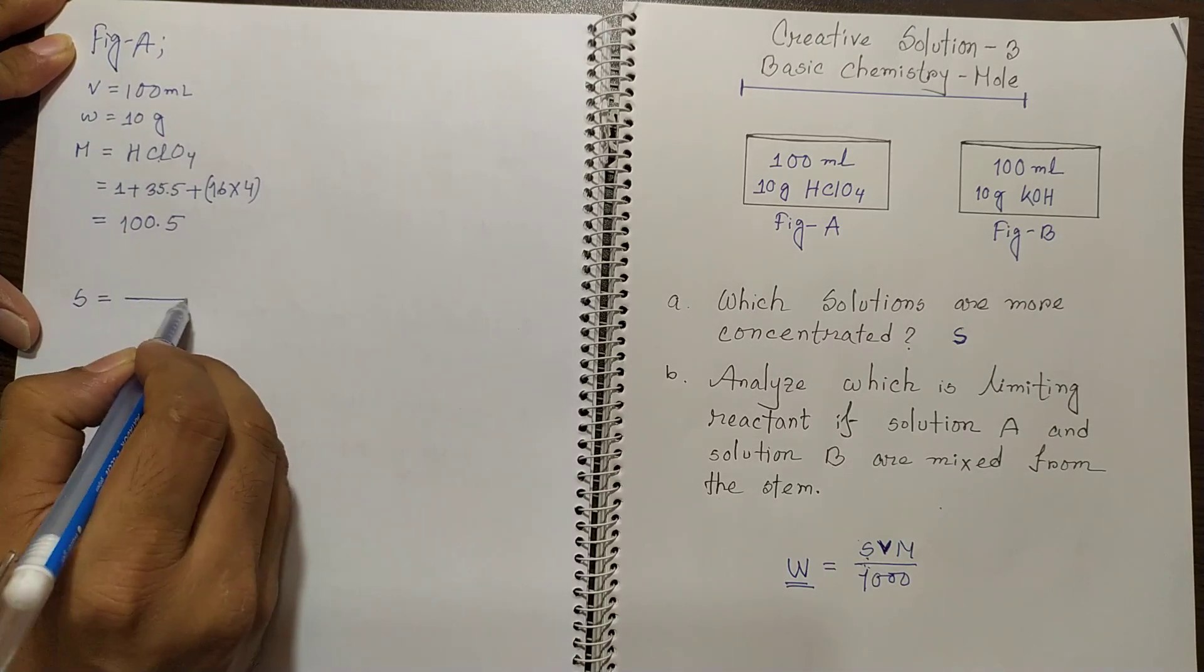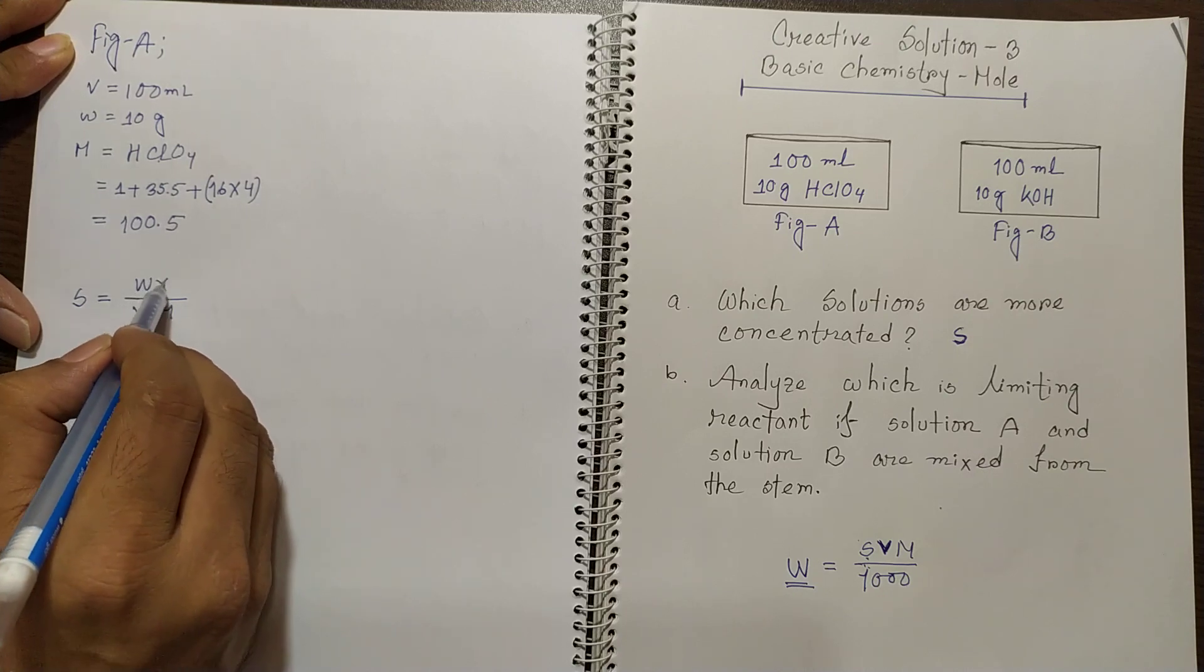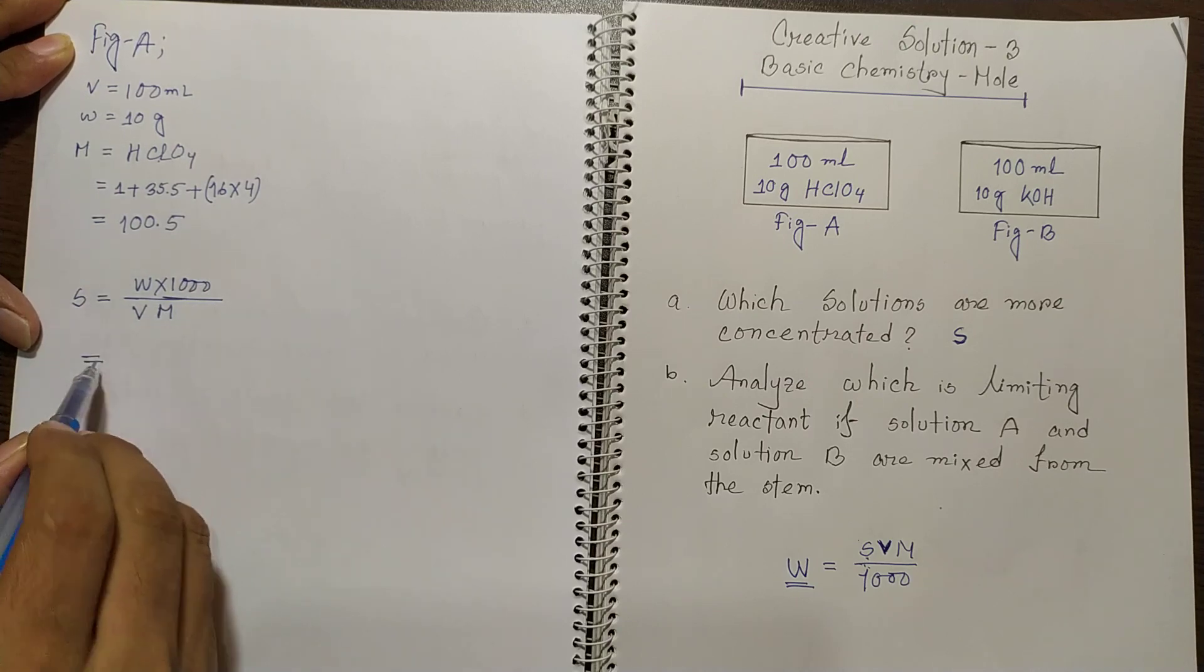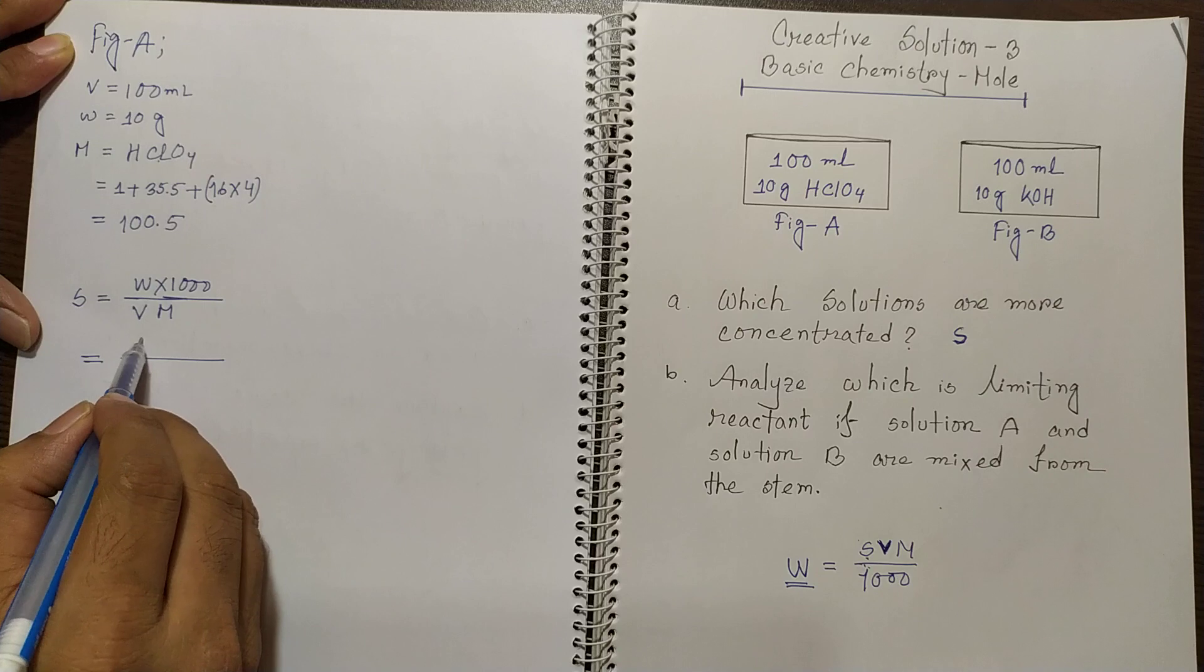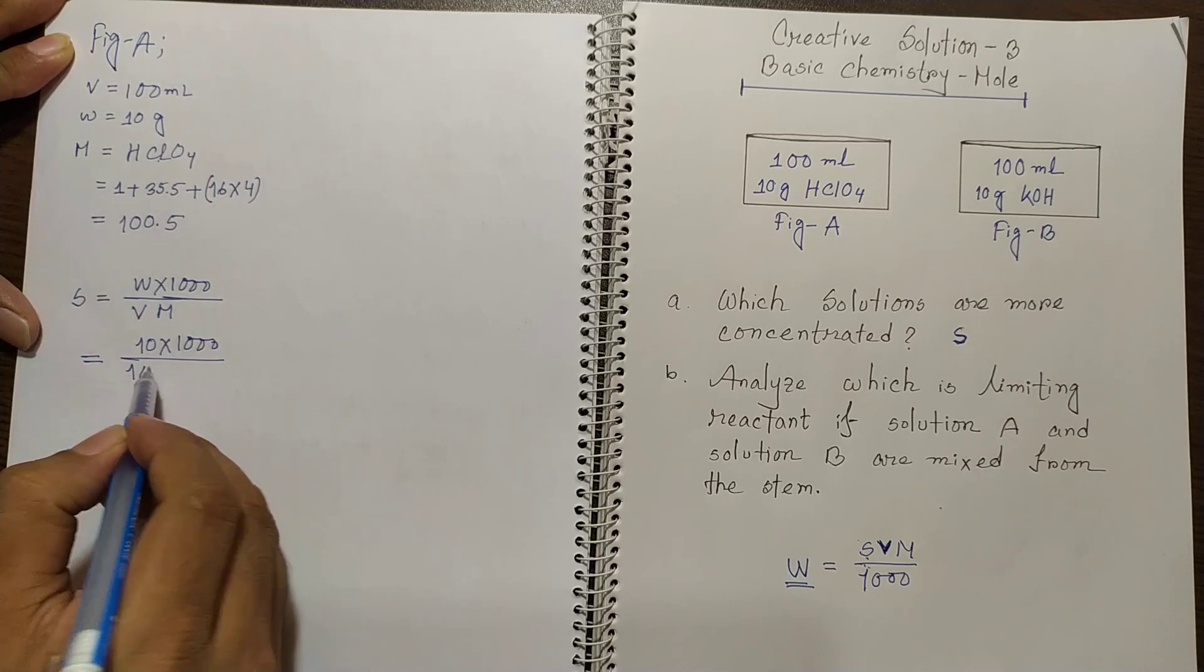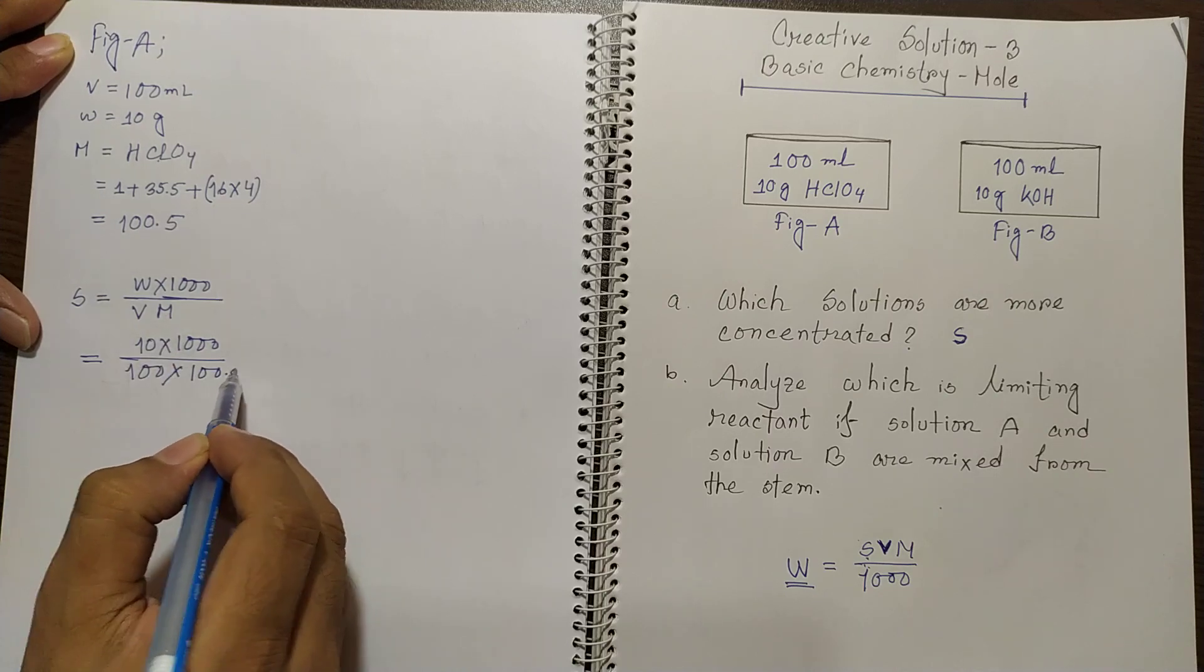So you can find the value of S from the equation. So S would be W times 1000 over V M. So you see that W is 10 times 1000, V is 100 and M is 100.5.